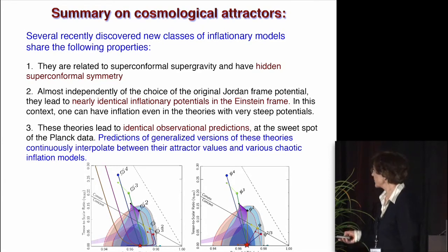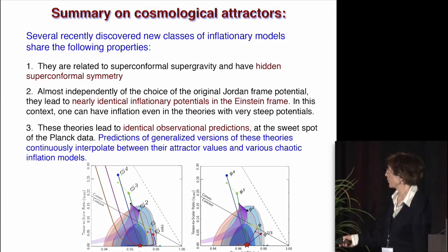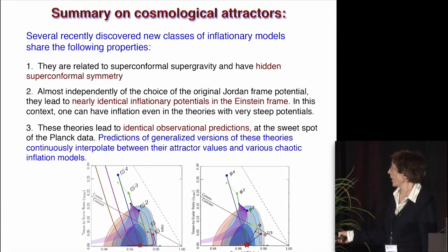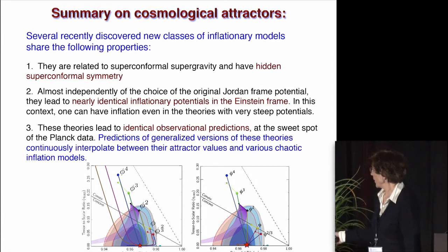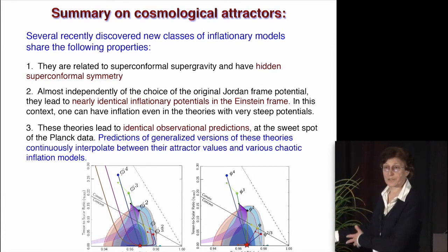So the predictions of generalized version of these theories continuously interpolate between their attractor values, which are down here, and various chaotic inflation models, which are either ruled out or marginal today. And so any discovery of B-mode somewhere here, we are ready to it. It will help us to get interpretation of any of these models. And so we really are looking for future data.